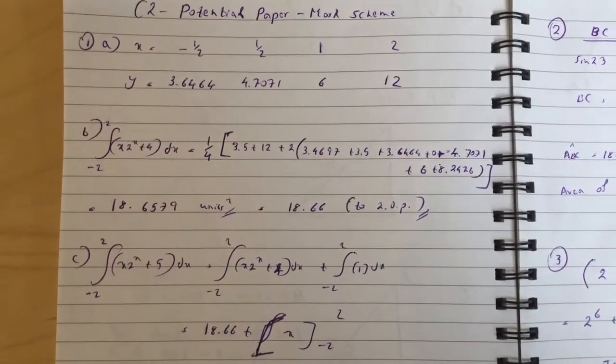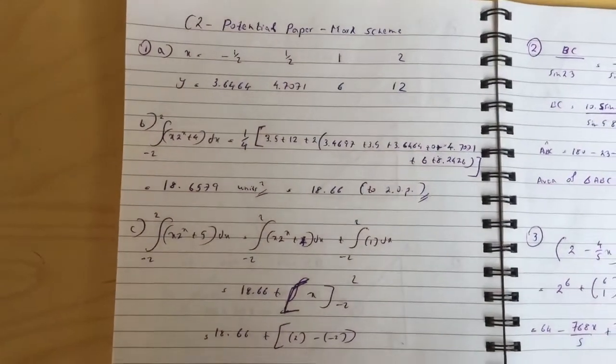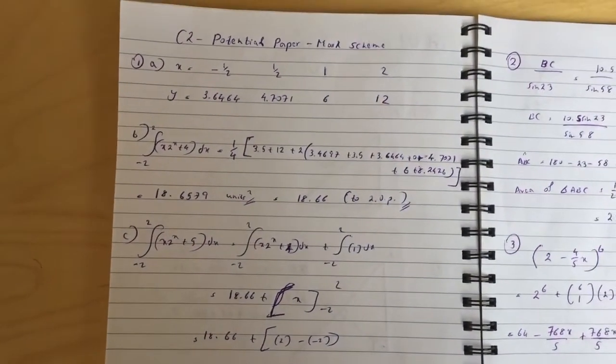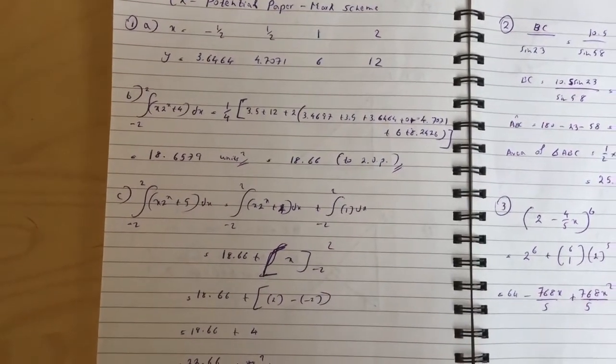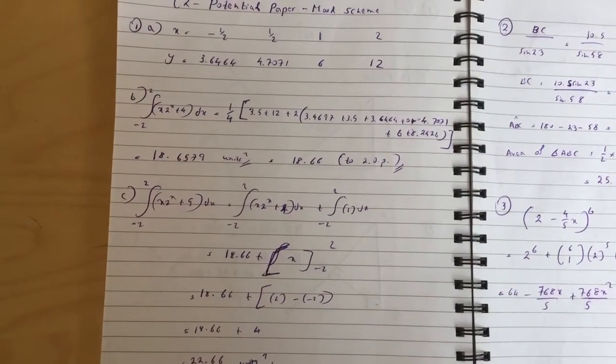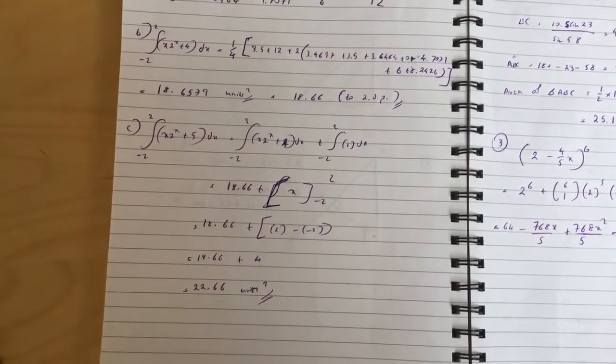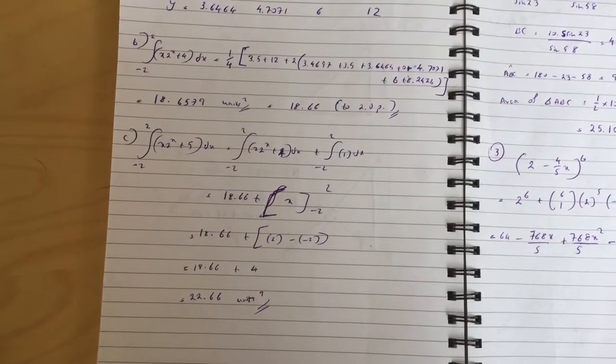Okay guys, so this is the solution for the C2 potential paper. The first question, you find the values for y for the missing values. Part b is 18.66 unit squared, part c is 22.66 unit squared.